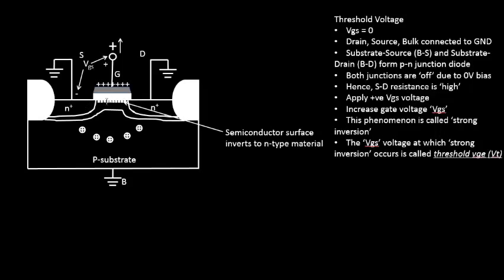Now you have a channel available. Apply potentials at the drain and source terminals, and the drain will attract electrons from this area, eventually producing a flow of current. We have separate slides on how the current actually flows, but the point at which the device provides a channel — that particular moment — is referred to as the threshold voltage. Since the channel is completely N-type, it is called an N-channel MOSFET — N-channel MOS (metal oxide semiconductor) transistor.